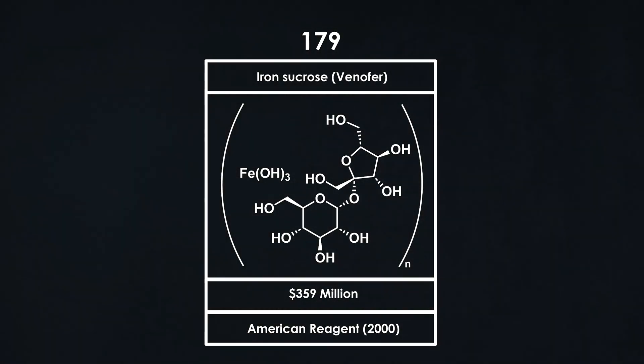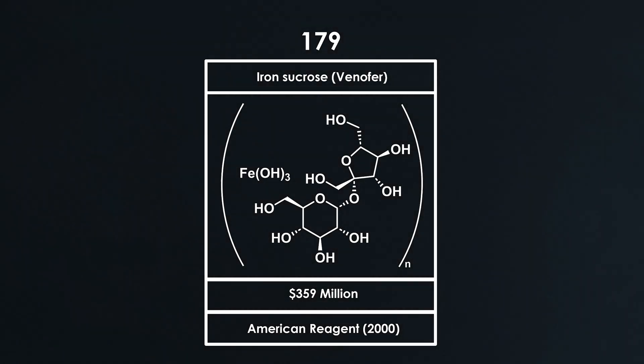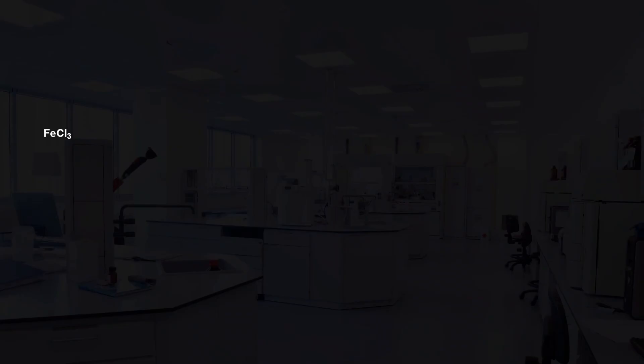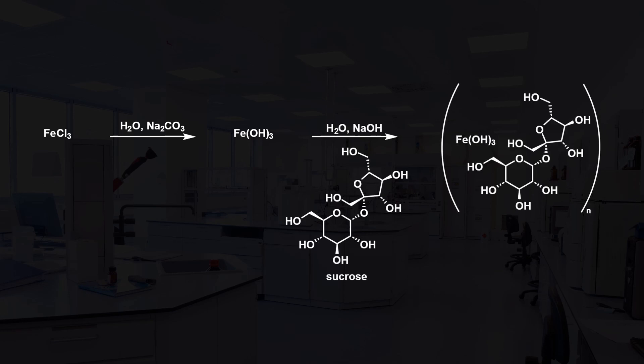Iron sucrose is a polymeric substance consisting of iron hydroxide and sucrose, which is a type of sugar. While there is no literature for the preparation of Venofer due to its unique manufacturing process, a patent describes that iron sucrose can be made by first treating an aqueous solution of iron chloride with sodium carbonate to produce iron hydroxide. This is then treated with sucrose at a pH between 10 and 11 and a temperature of around 85 degrees, allowing for polymerization to take place.